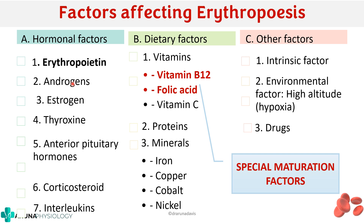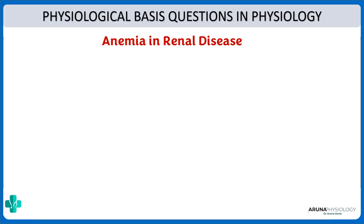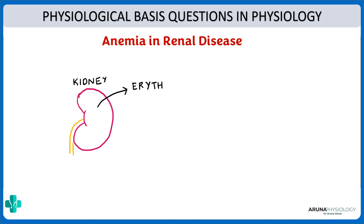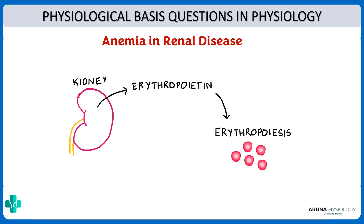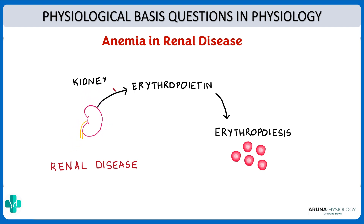In hormonal factors we have first seen erythropoietin. Before moving on to androgens, an important physiological basis question: why is there anemia in renal disease? Because it is in the kidney that we have the hormone erythropoietin, which stimulates erythropoiesis. If there is a chronic renal disease, the kidneys are going to shrink and be less effective, so naturally the production of erythropoietin will be affected, causing a decrease in erythropoietin and thus anemia in renal disease.